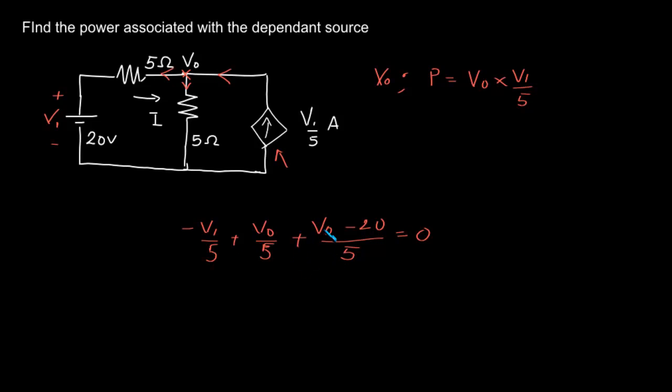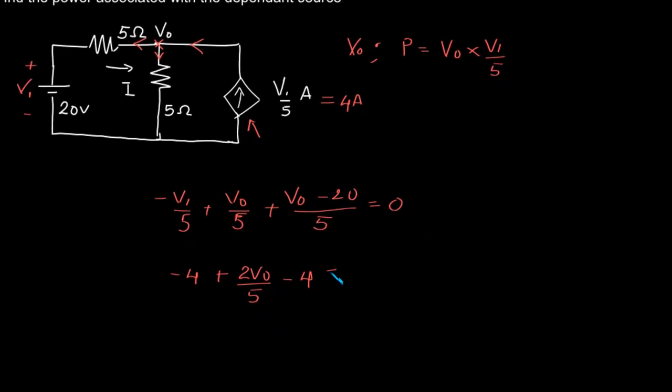Now we have two unknowns. But it is clear that if V1 equals 20 volts, then V1 by 5 will be 4 amps. That is, we have V1 by 5 is nothing but 4 amps. That is, minus 4 plus 2V0 by 5, minus 20 by 5 is another 4, equal to 0.